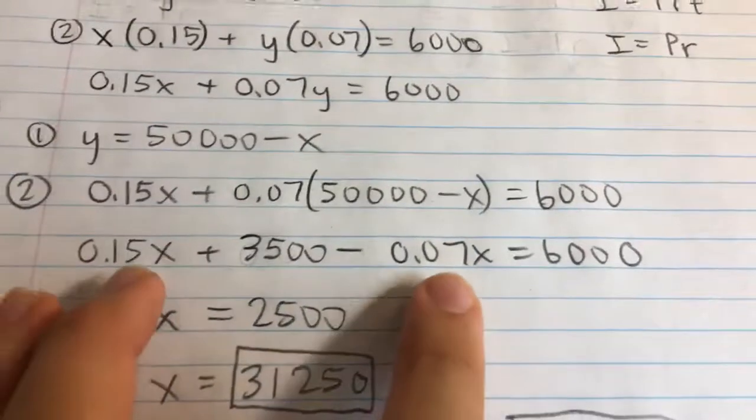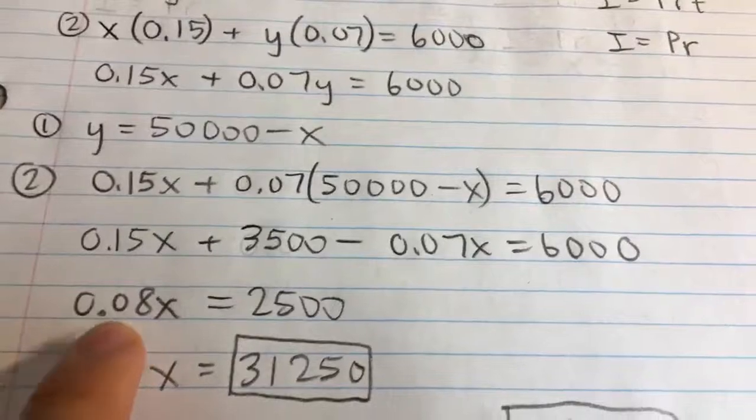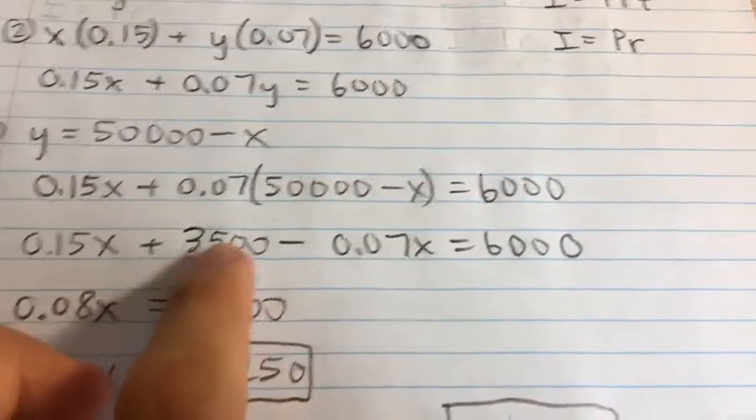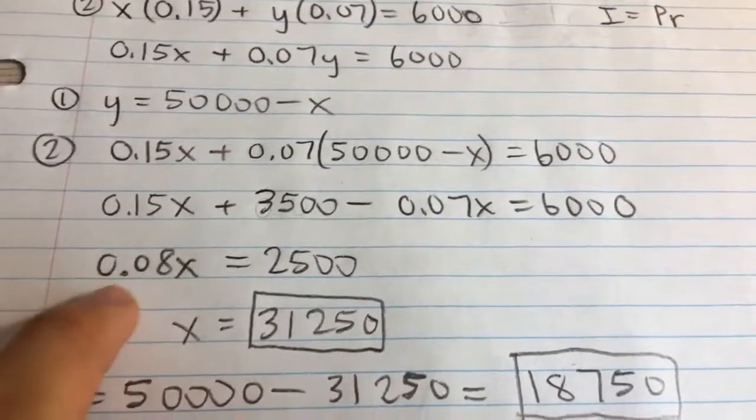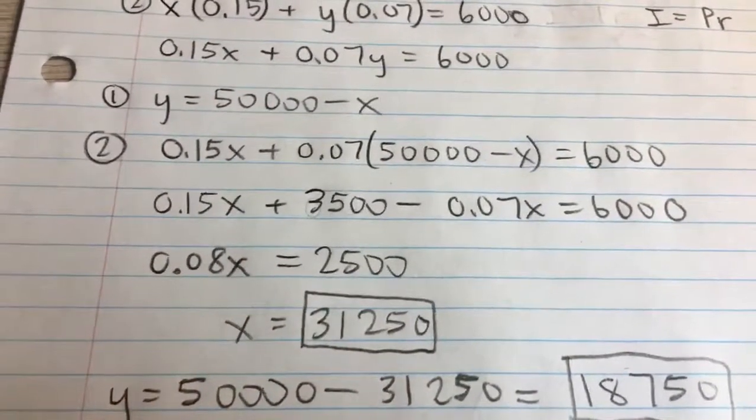Now I'll collect the like terms of X, getting 0.08X on the left side. Subtracting 3,500 from both sides gives 2,500 on the right. Finally, dividing both sides by 0.08 gives X = 31,250.